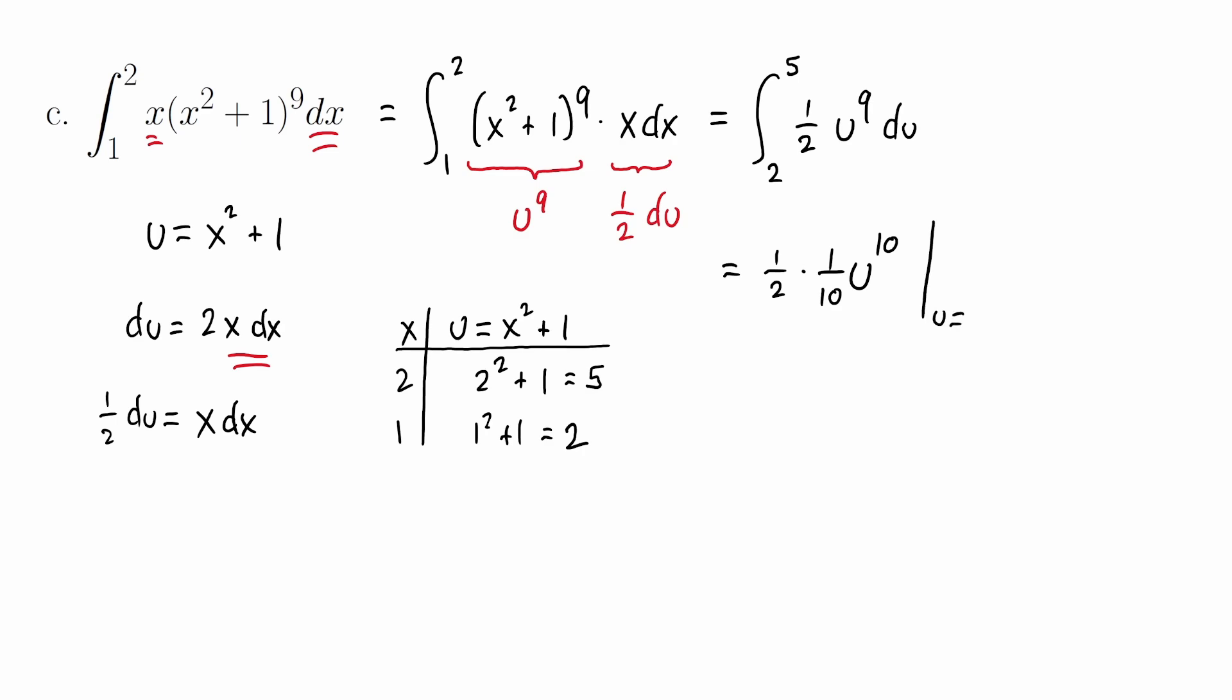That's going to be evaluated from u equals 2 to u equals 5. Now you can clean up those factors of a half and one tenth—write that as 1 over 20, u to the tenth. Now we'll evaluate from u equals 2 to u equals 5. If you go ahead and plug that in, we get some powers here: 5 to the tenth power and 2 to the tenth power. You don't actually have to calculate those, but you can simplify this as 1 over 20 factoring that out from both terms, and then 5 to the tenth minus 2 to the tenth.